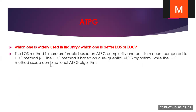Which method is widely used in industry — which one is better, LOS or LOC? Normally in all cases we use the LOC method because there are some drawbacks in LOS. The LOS method is more preferable based on ATPG complexity and pattern count compared to the LOC method. The LOC method is based on the sequential ATPG algorithm, while LOS uses the combinational ATPG algorithm.